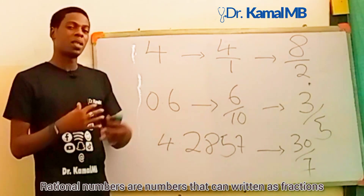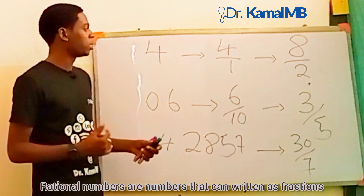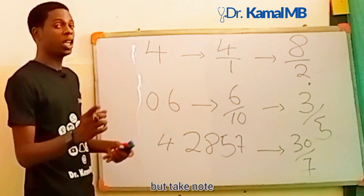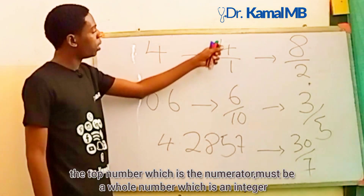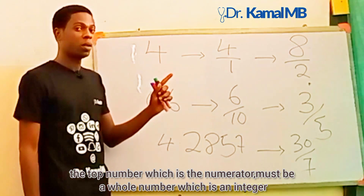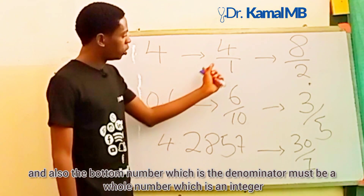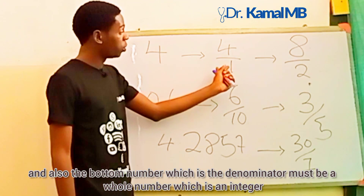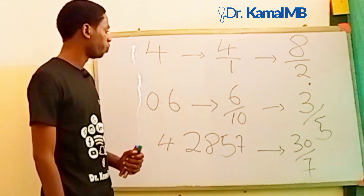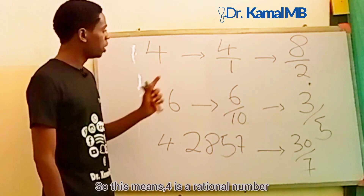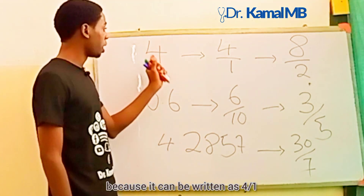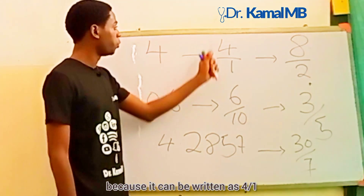Rational numbers are numbers that can be written as fractions, but take note: the top number, which is the numerator, must be a whole number which is an integer, and also the bottom number, which is the denominator, must be a whole number with an integer also. So this means four is a rational number because it can be written as 4 over 1.